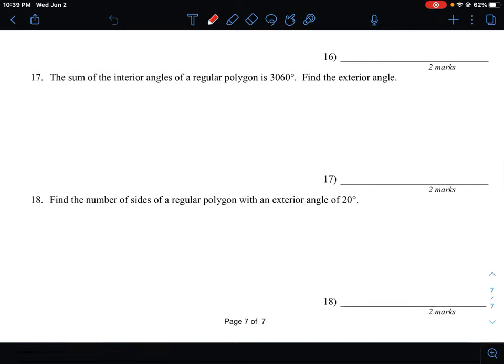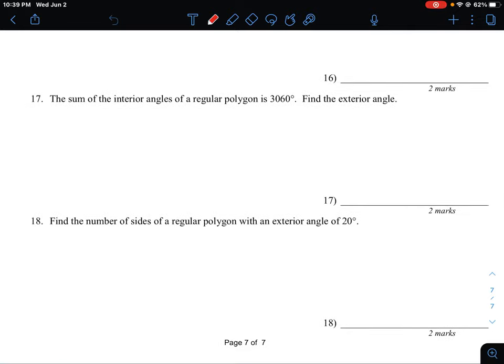Let's take a look at question number 17. The sum of the interior angles of a regular polygon is 3060 degrees. What we need to know is the formula for how to calculate the sum of angles given a polygon, a general polygon case.